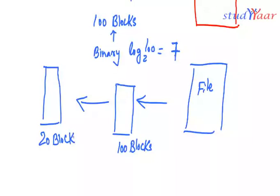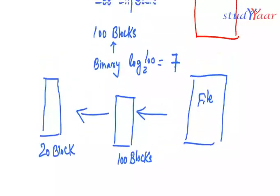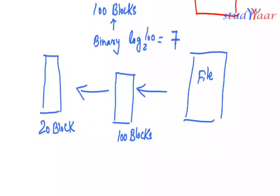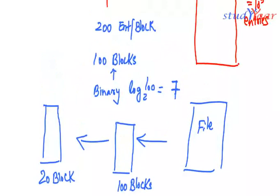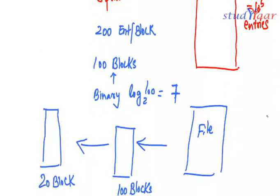Now let's suppose we had 100 blocks over here and we create an index for every fifth block so I would have say 20 blocks over here.